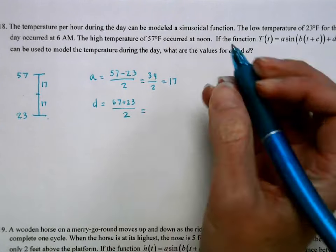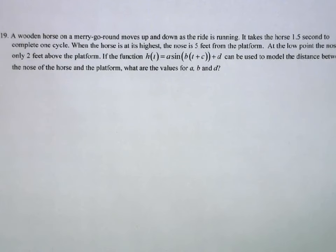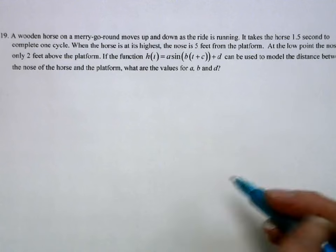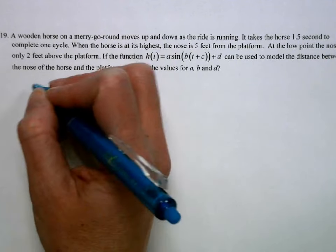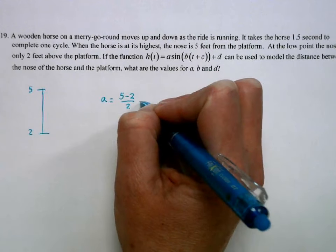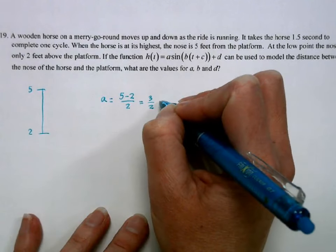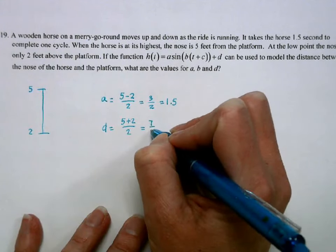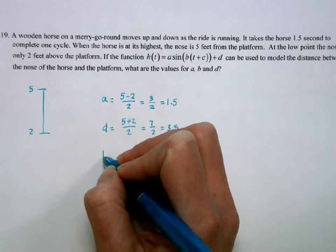A wooden horse on a merry-go-round takes 1.5 seconds to complete one cycle. Highest point is 5 feet from the platform, lowest is 2 feet. Amplitude a = (5 − 2)/2 = 1.5. Midline d = (5 + 2)/2 = 3.5. Since the period is 1.5 seconds, b = 2π/1.5 = 4π/3.